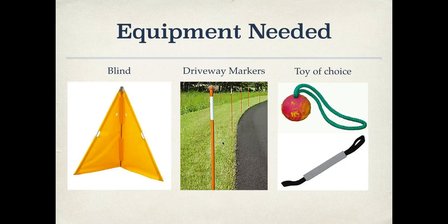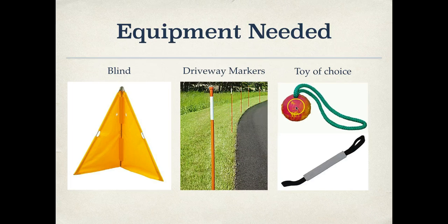Equipment needed is a blind. Any blind will do - regulation size, mini blind, whatever you got. I personally use a regulation size, but you can do it with a small blind as well. Driveway markers can be found at any home improvement store. Quite cheap, so it's not a big hit on the pocketbook. I start off with ten of them. Toy of choice - ball, tug, sleeve, whatever motivates your dog.